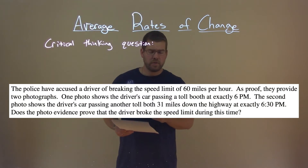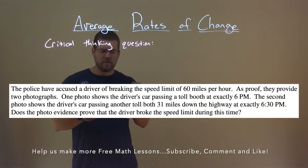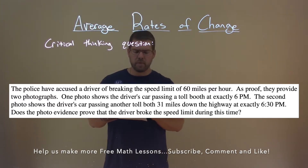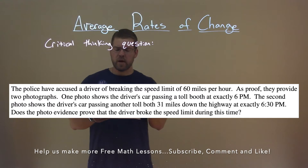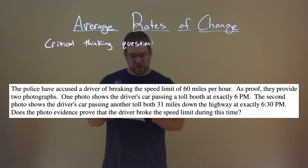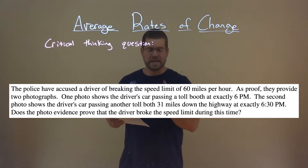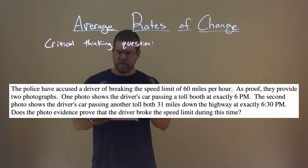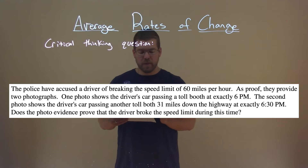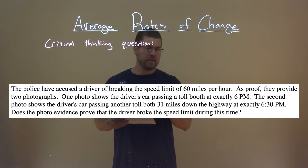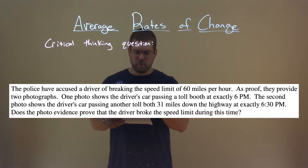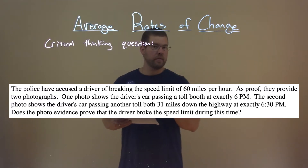We're given this critical thinking question. The police have accused a driver of breaking the speed limit of 60 miles per hour. As proof, they provide two photographs. One photo shows the driver's car passing a toll booth at exactly 6 p.m. The second photo shows the driver's car passing another toll booth 31 miles down the highway at exactly 6:30 p.m. Does the photo evidence prove that the driver broke the speed limit during this time?